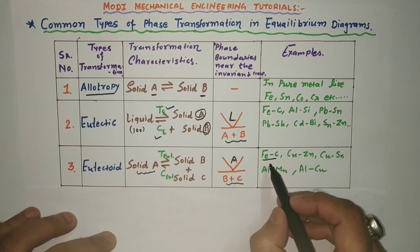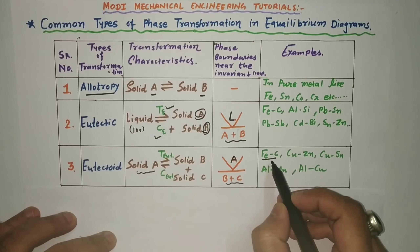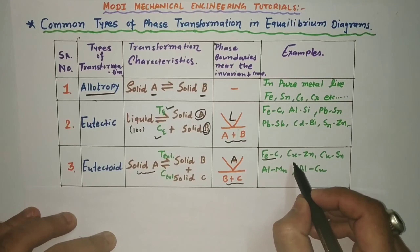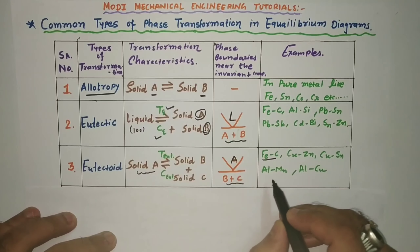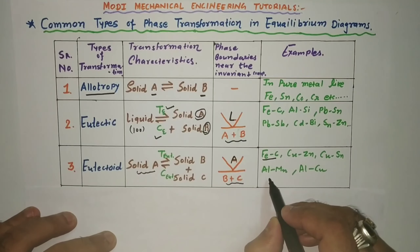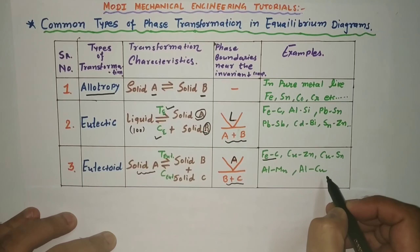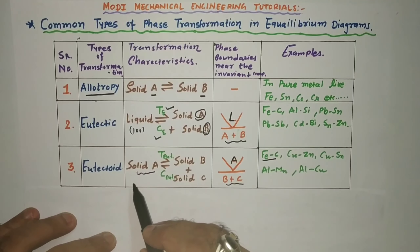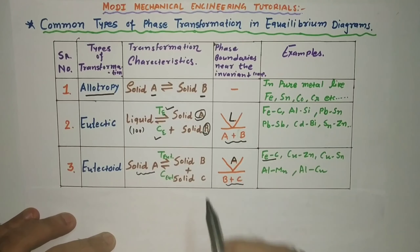Examples of eutectoid transformation include the iron-carbon diagram, copper-zinc, copper-Sn, Al-Mn, Al-Co, and many more — all following the transformation from one solid into two more solids.